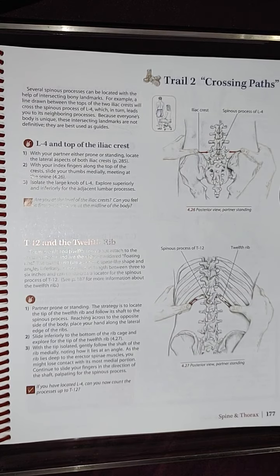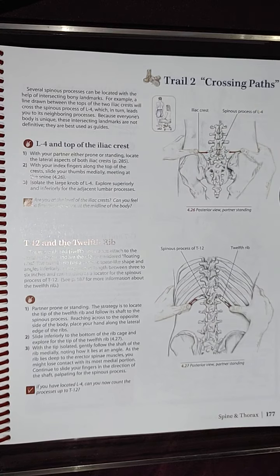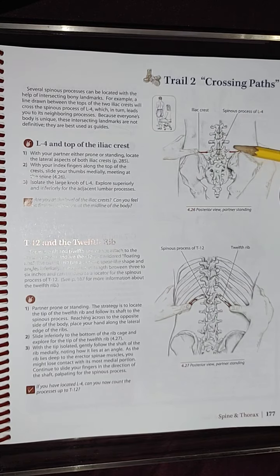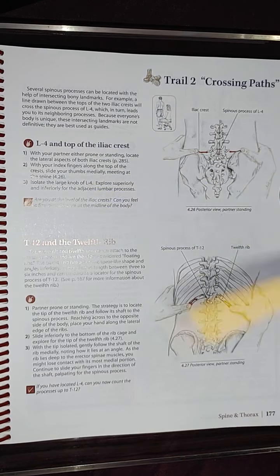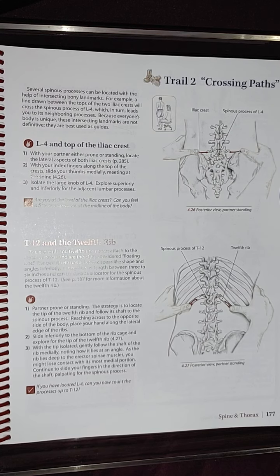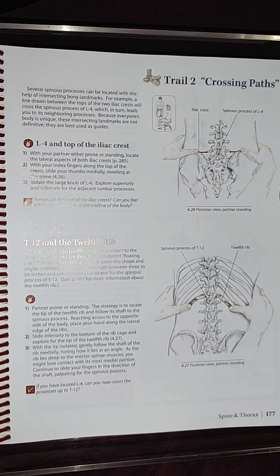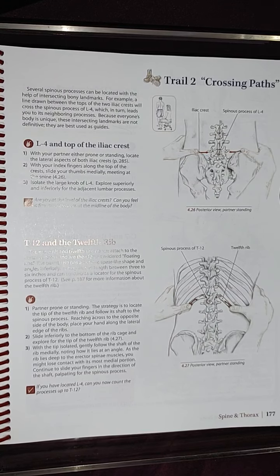Because everyone's body is unique, these intersecting landmarks are not definitive — they are best used as guides. So when you are there, you know that you are at L4. L4 is at the top of the iliac crest. With your partner either prone or standing, locate the lateral aspects of both iliac crests. With your index fingers along the top of the crest, slide your thumbs medially, meeting at the spine.